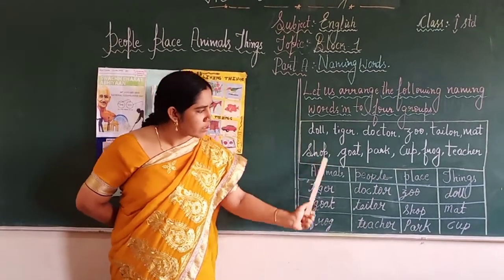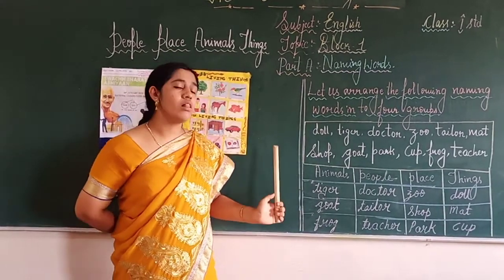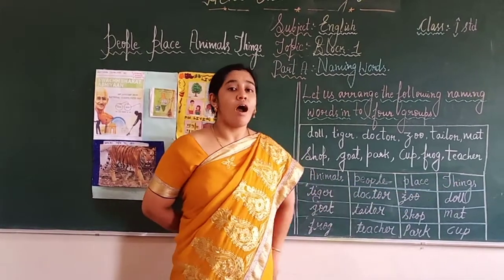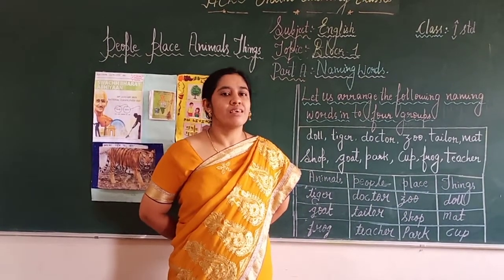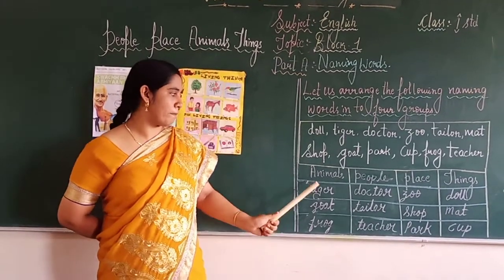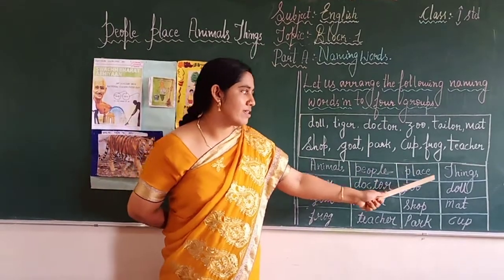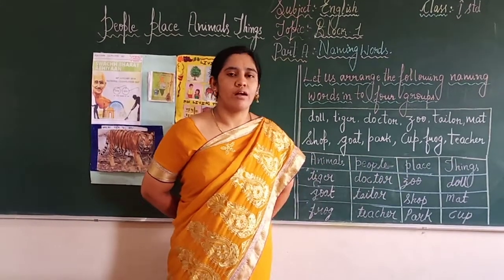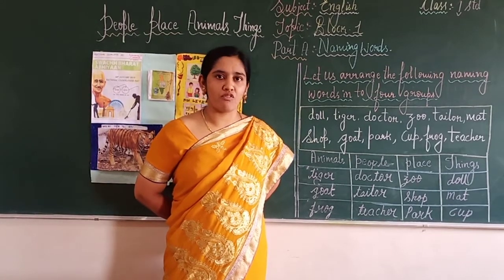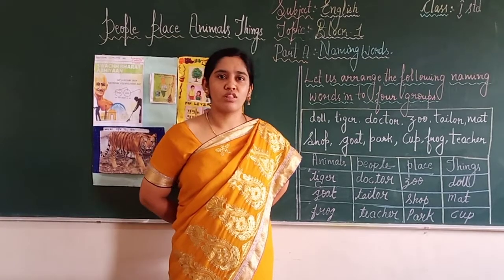What are all these? These are all names. Which names? All the names of animals, people, places, and things are called naming words. Naming words means all the words which represent the name of an animal, people, places, and things are called naming words. I hope you understood this topic — naming words.